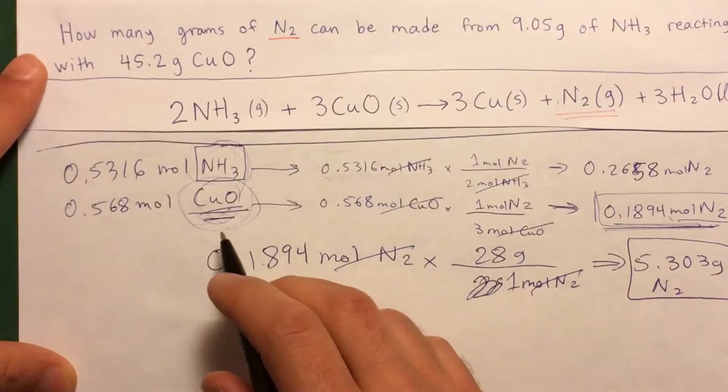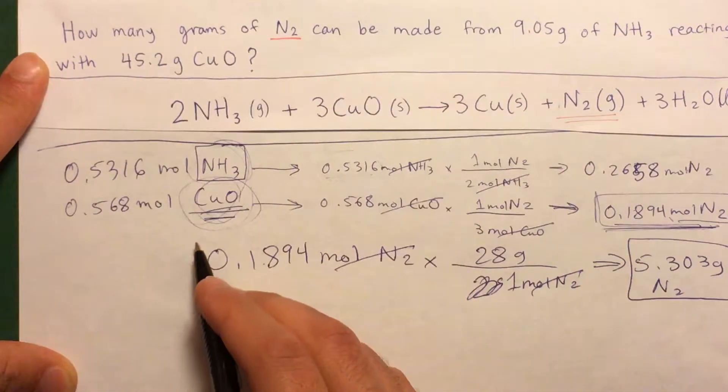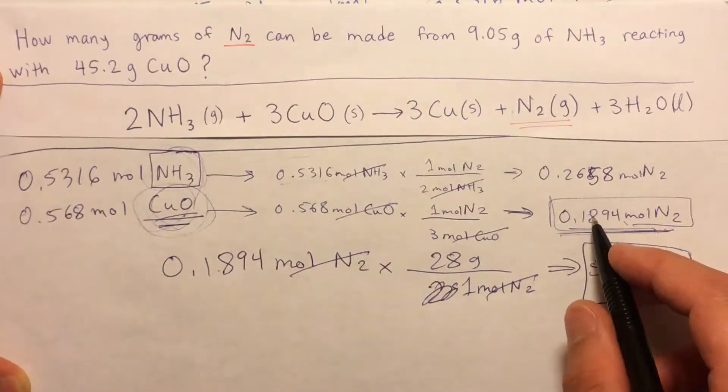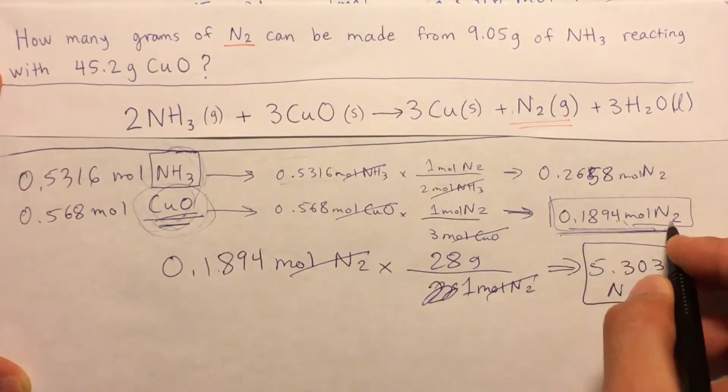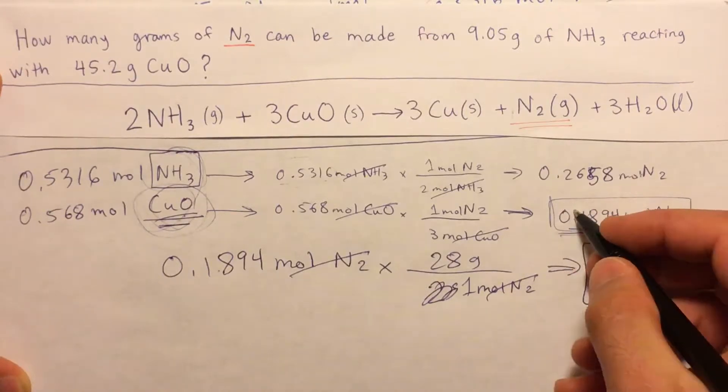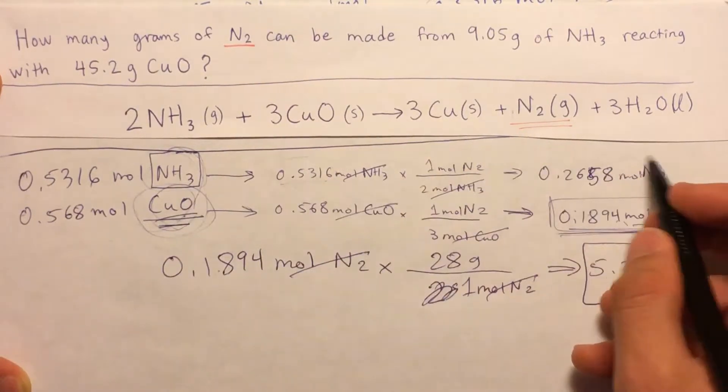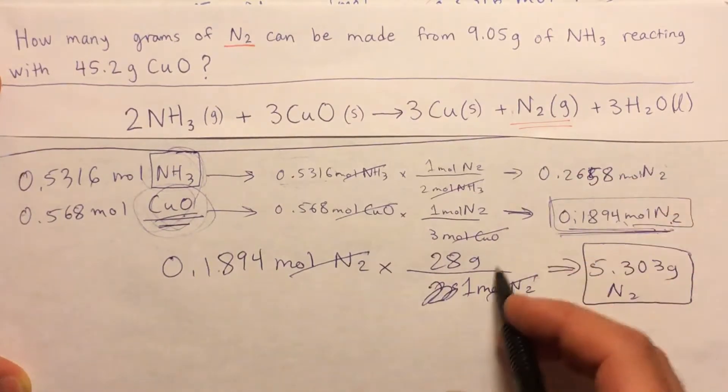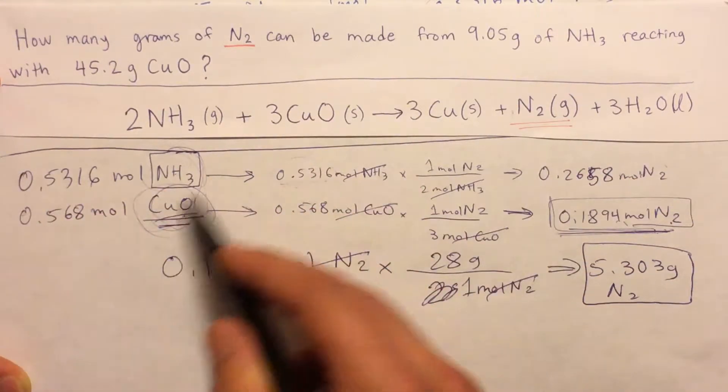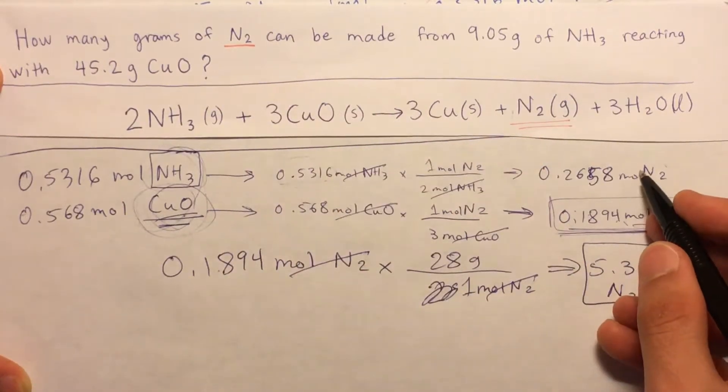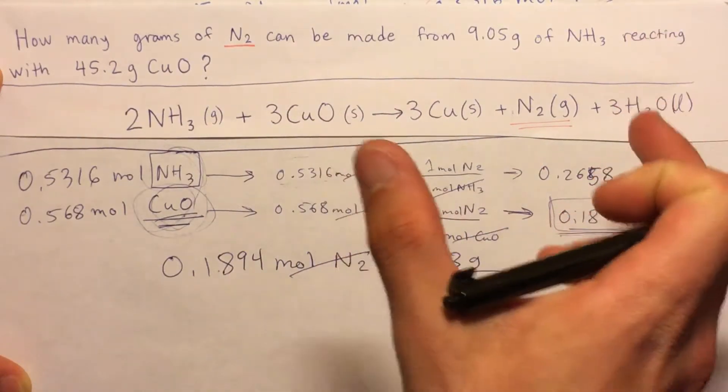You have to see, so right here, we produced a maximum of 0.1894 moles. So that means the NH3 has to also produce 0.1894 moles of N2, because they're both on the reactant side, they have to work together, they produce the same amount of N2 in this same reaction.